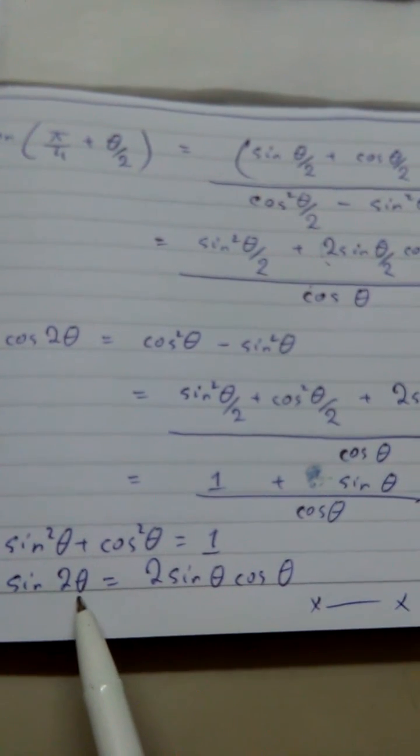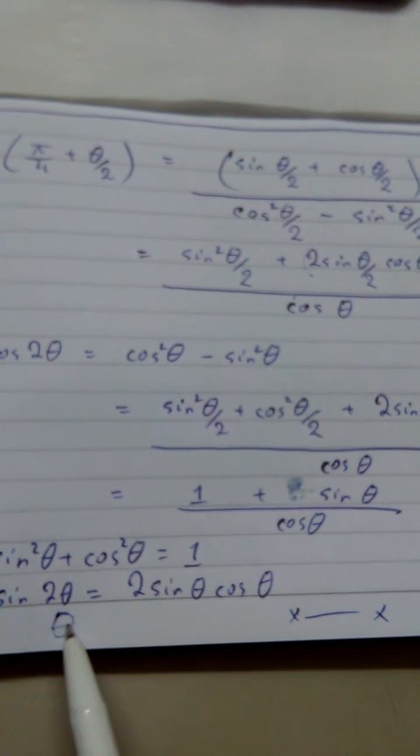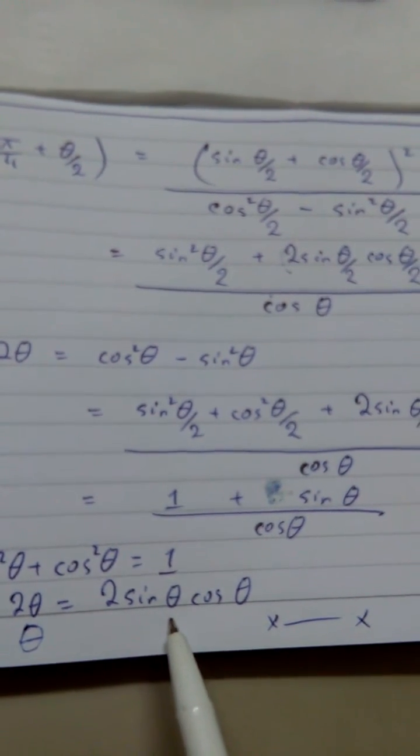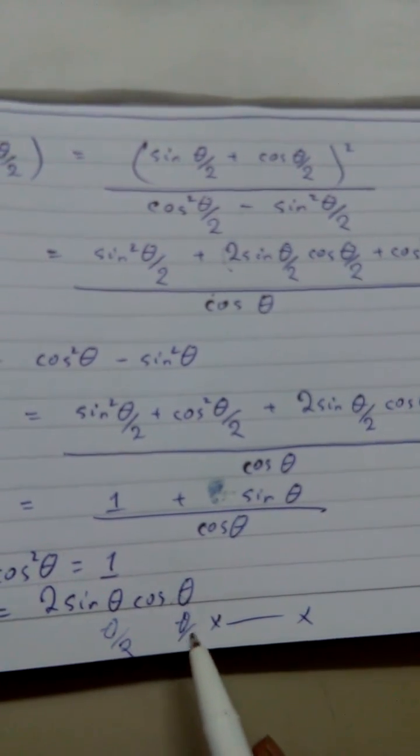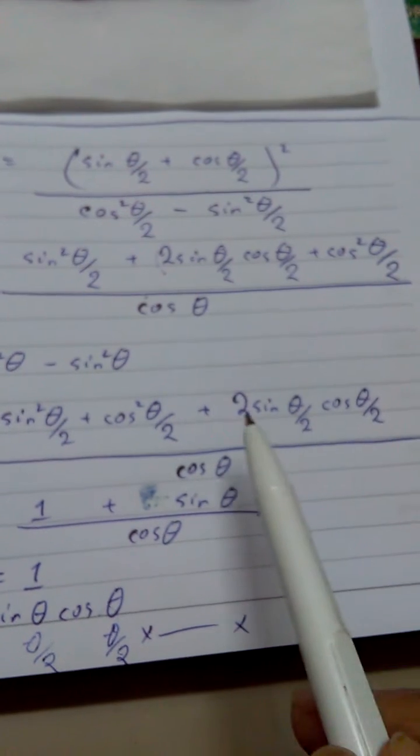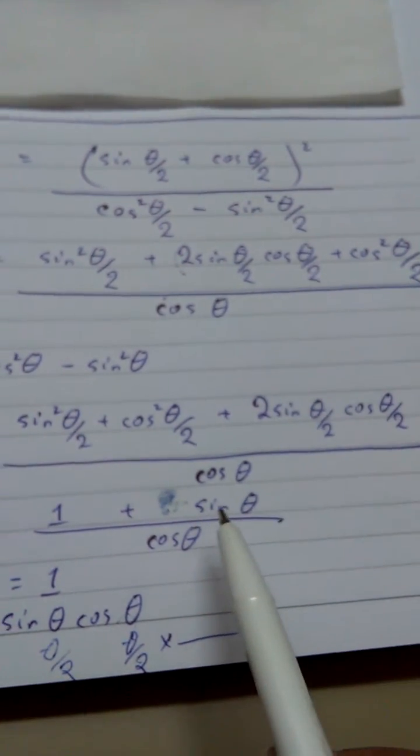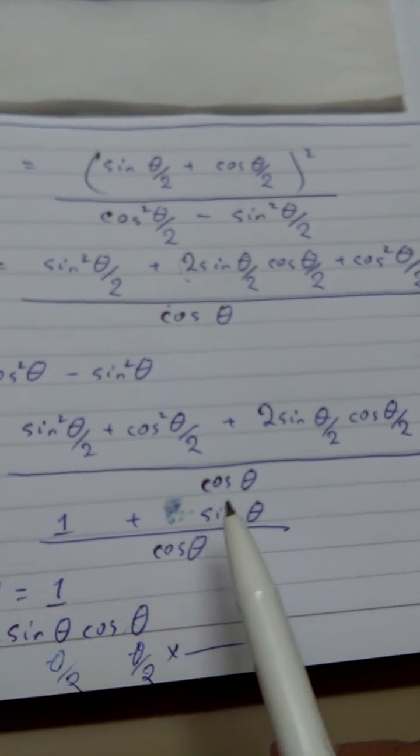Now over here, if I just replace this 2θ by my single θ, then the half of the θ is going to be θ/2. So I can replace this factor by simple sin θ.